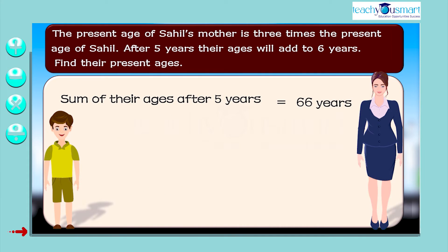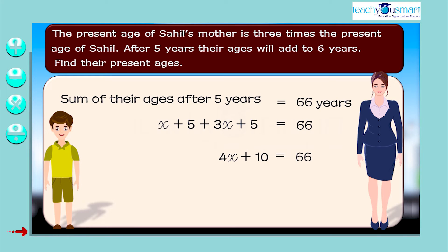The sum of their ages after five years equals 66 years. That is, x plus 5 plus 3x plus 5 equals 66. That is, 4x plus 10 equals 66.